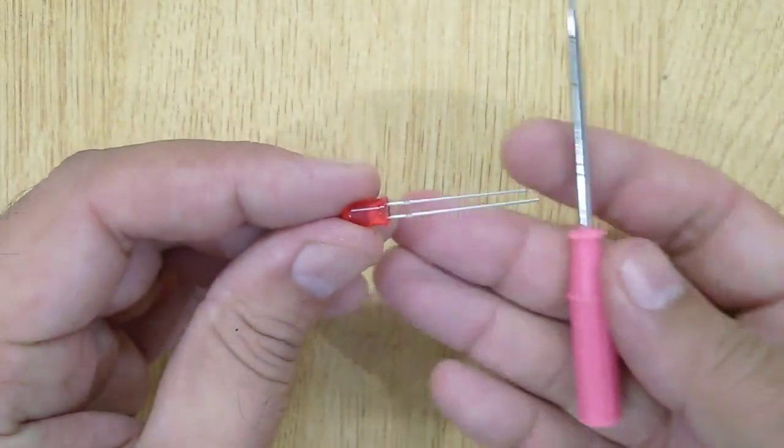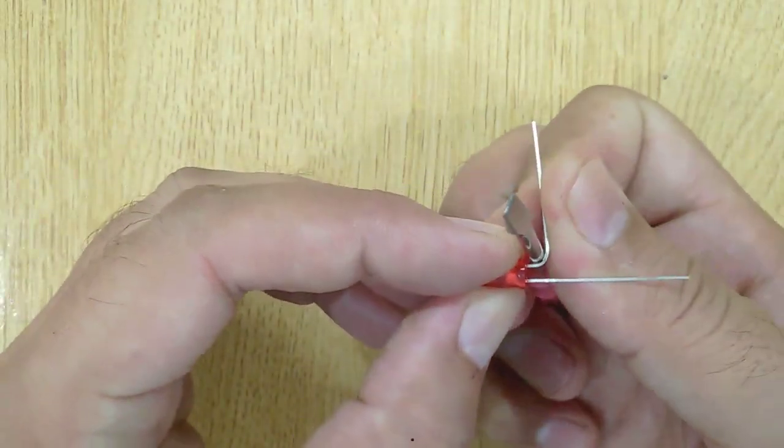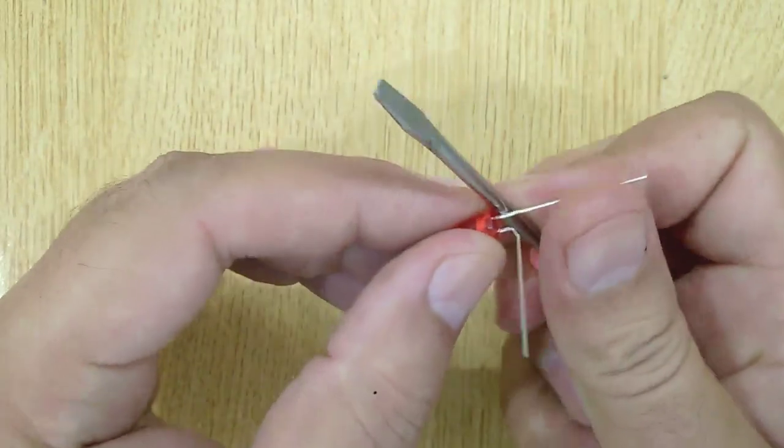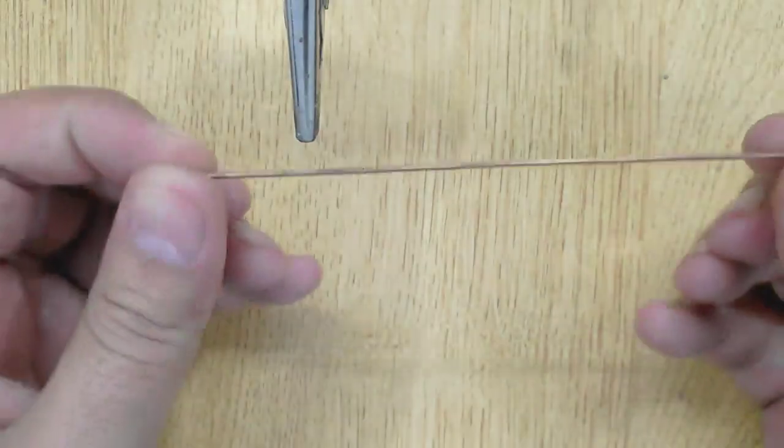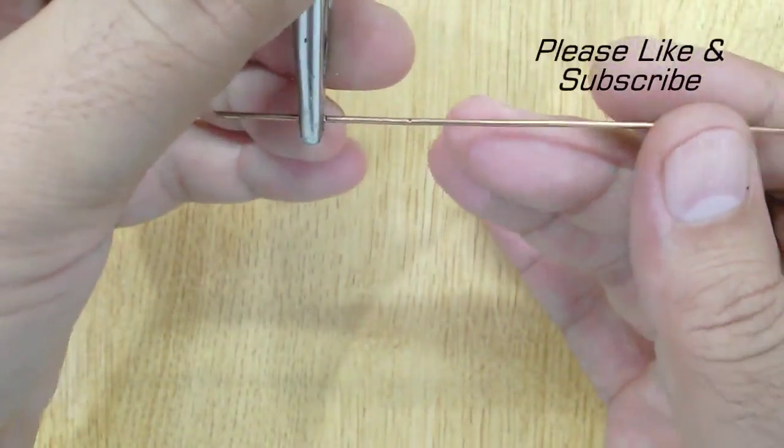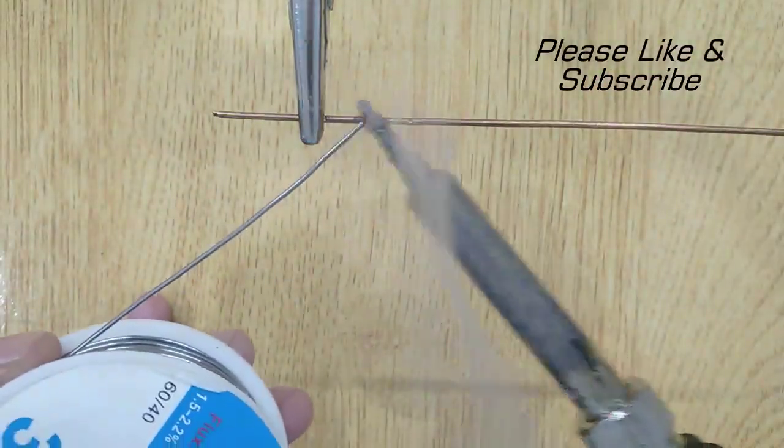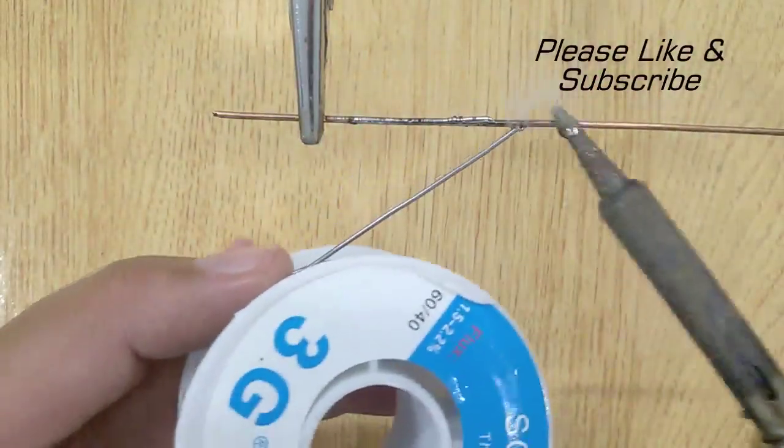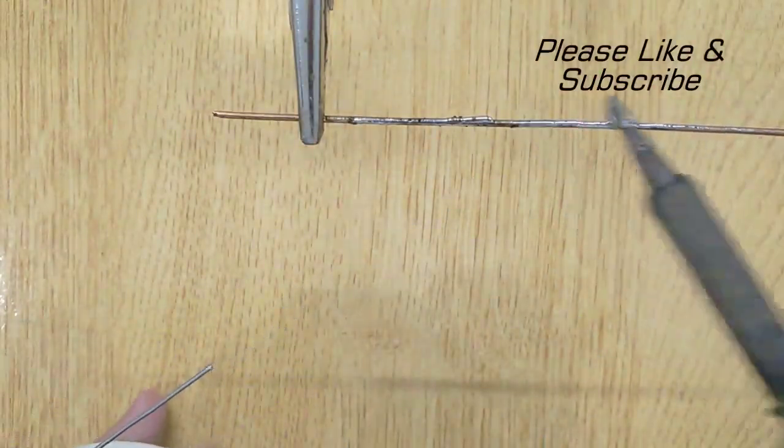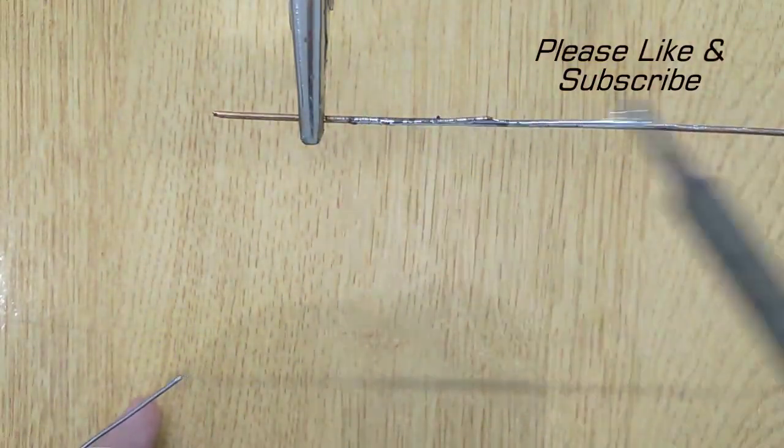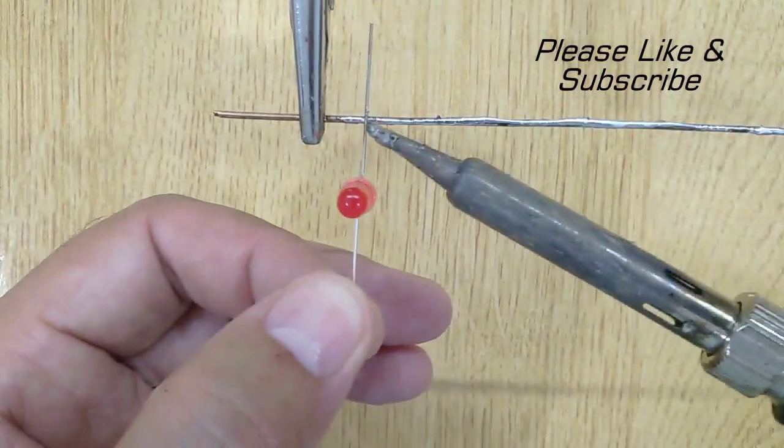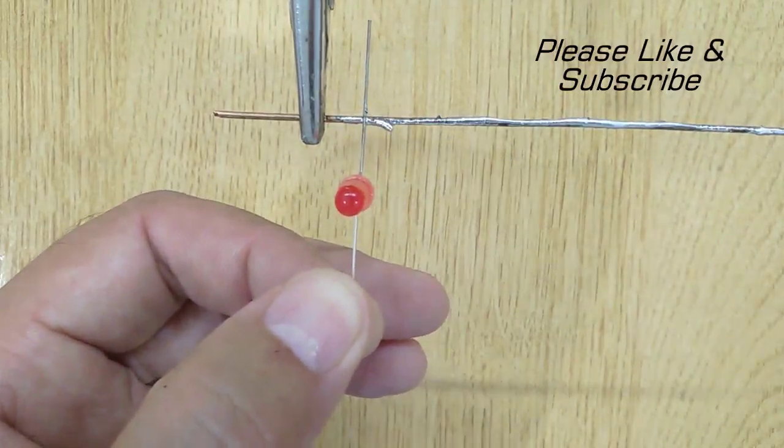Let's get started. Twist all LEDs using the screwdriver and apply some solder on both copper wires. After that, solder all LEDs on these two copper wires.